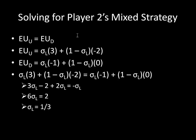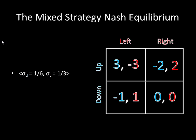We set those two equations equal to each other — expected utility for up equals expected utility for down — and working through the algebra, you get sigma_l equals one third. So if player two is playing left with probability one third and right with probability two thirds, then player one is indifferent between choosing up and down. This equation assures that his expected utility is the same whether he plays up or down. So the mixed strategy Nash equilibrium is for player one to play up with probability one sixth and down with probability five sixths, and for player two to play left with probability one third and right with probability two thirds.